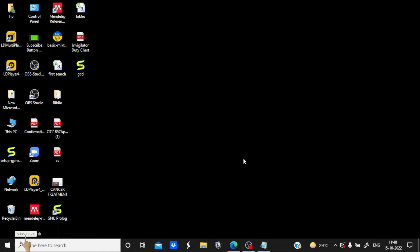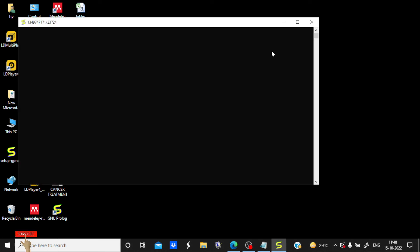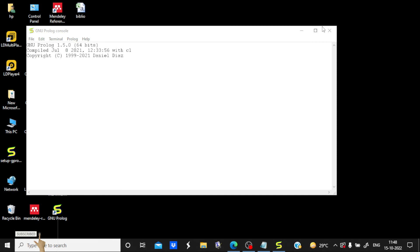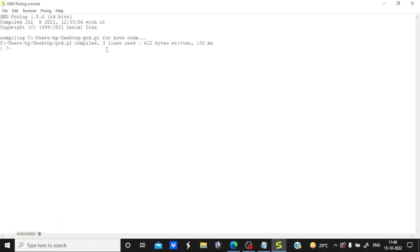So when you open this it will look like this, gcd a prolog file, and you need to double click. So it says compiled three lines read. That means there is no error in our program. It is compiled successfully.